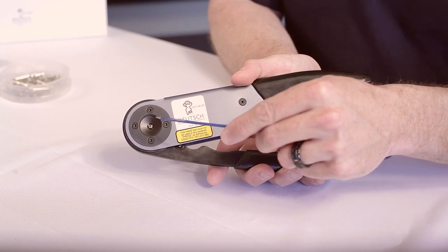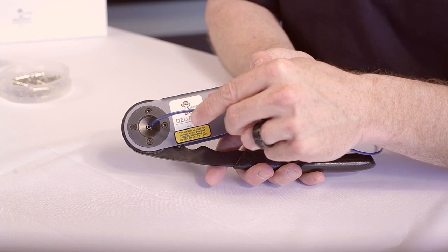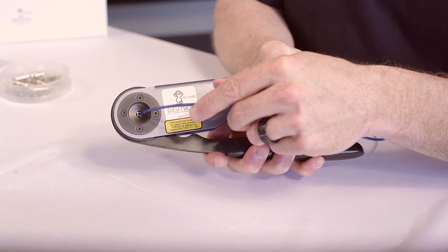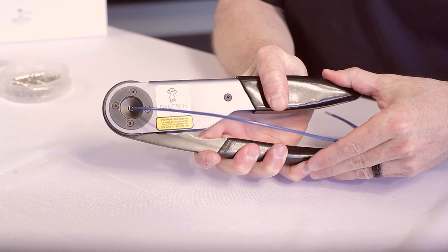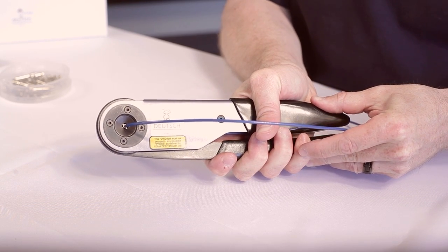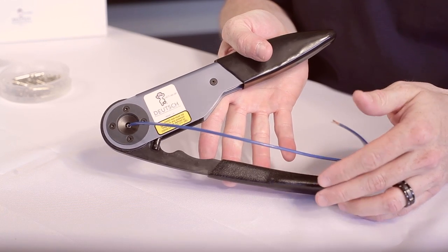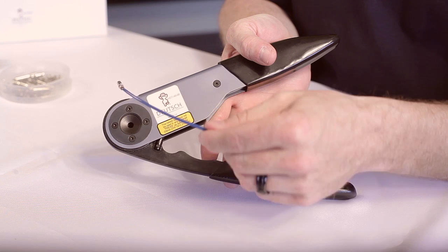Insert your correctly stripped wire into the crimp barrel until it stops and squeeze the handles together. The locking ratchet action won't release the crimping die until you fully close the handles. Once the handles have been fully closed and your crimp is completed, they will automatically release and you can remove your contact.